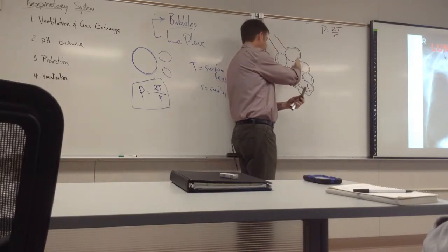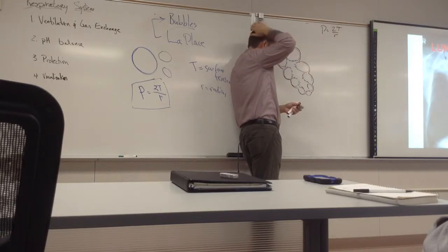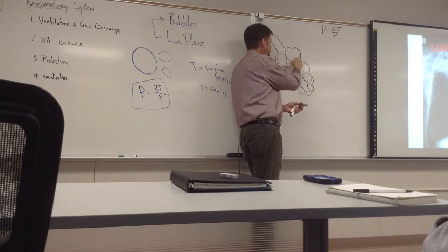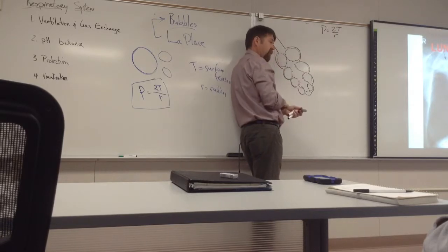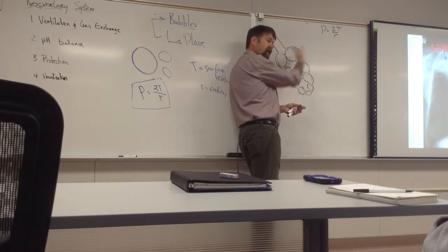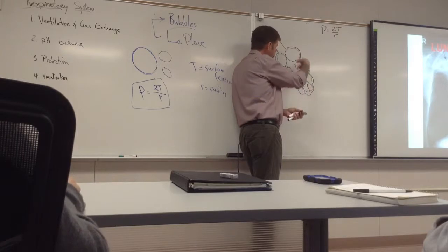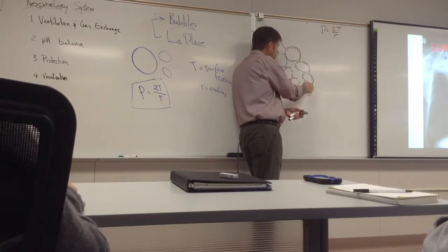If surface tension of this water or this fluid is constant, let's assume that it is. What's changing in these with regard to pressure is the radius, correct? If T is constant, all the water is the same, the fluid is the same, we are changing the radius.